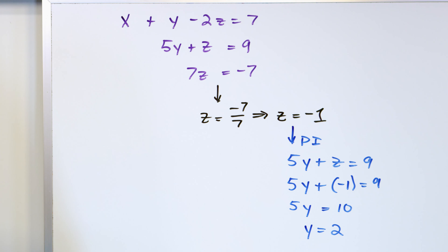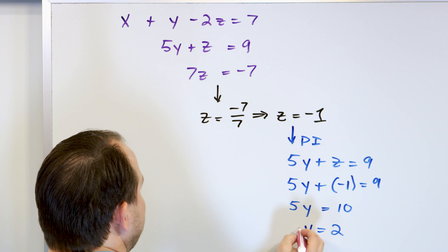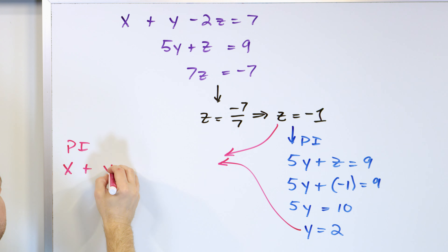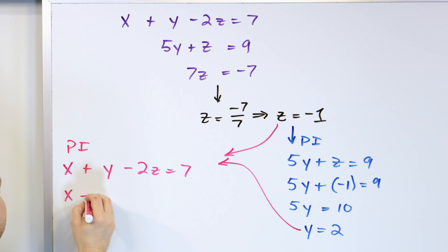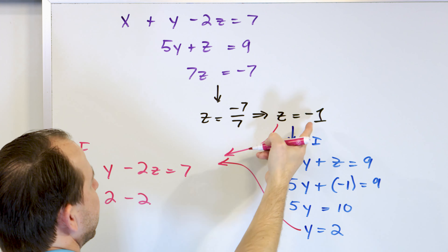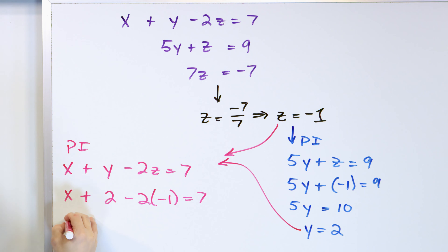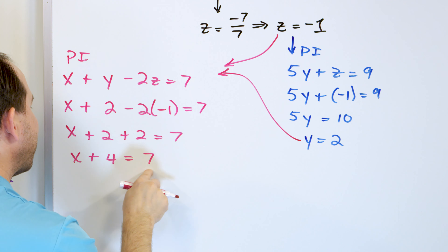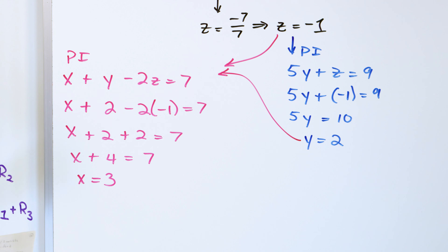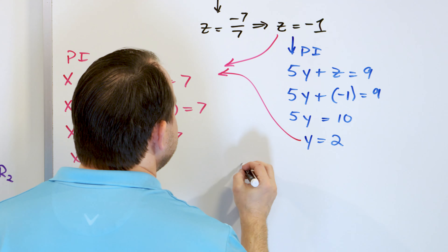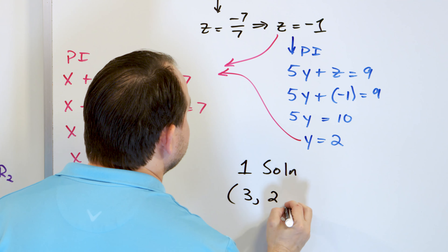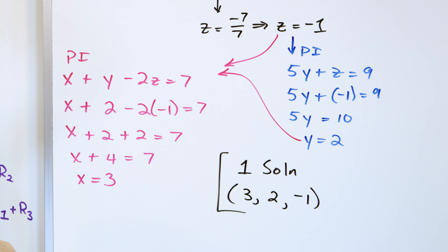Take the z value and the y value and plug into the top equation: x plus y minus 2z equals 7. The y value is 2 and the z value is negative 1, so x plus 2 minus 2 times negative 1 equals 7. That gives x plus 2 plus 2 equals 7, so x plus 4 equals 7. Subtract 4 from both sides to get x equals 3. So the final answer is the point (3, 2, negative 1) - x equals 3, y equals 2, z equals negative 1.